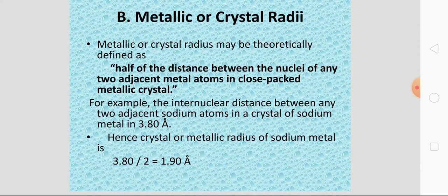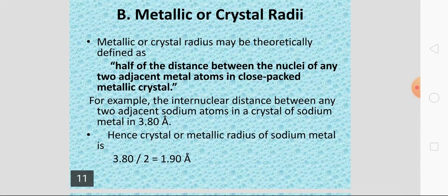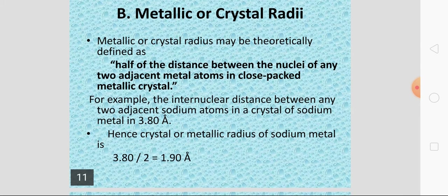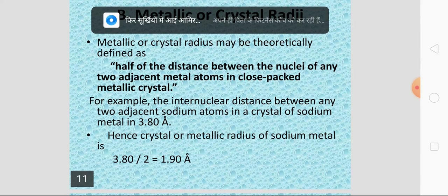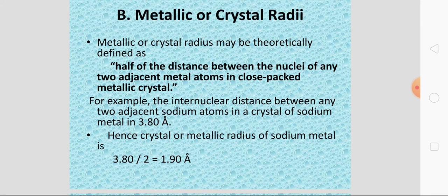Now let's go to metallic and crystal radii. The metallic and crystal radius may be theoretically defined as half of the distance between the nuclei of any two adjacent metal atoms in a close-packed metallic crystal. For example, the inter-nuclear distance between two adjacent sodium atoms in a sodium metal crystal is 3.80 Ångström, so the metallic radius of sodium is 1.90 Ångström.